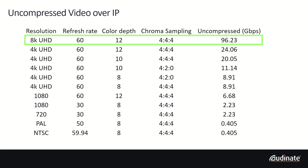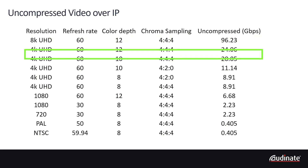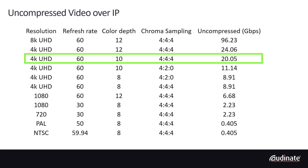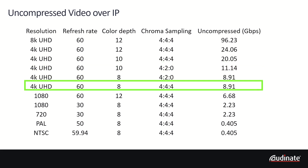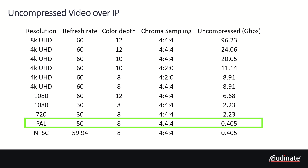For example, 8K resolution with 60 frames per second, 12-bit color depth, and 4:4:4 sampling requires almost 100 gigabits per second for uncompressed images. As you can see in the chart, the uncompressed bit rate decreases as the quality factors are reduced. For instance, 4K at 60 frames per second with 10-bit color at 4:4:4 requires about 20 gigabits per second, while standard definition NTSC and PAL require about 400 megabits per second.